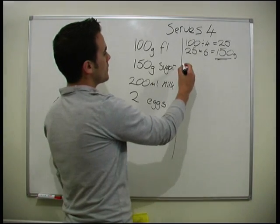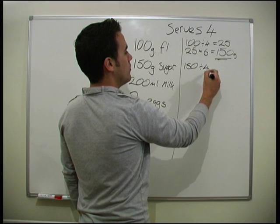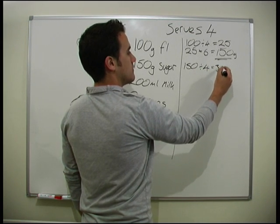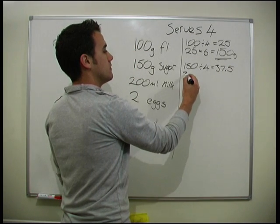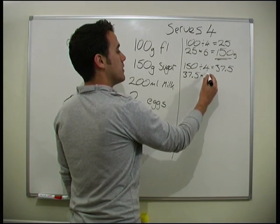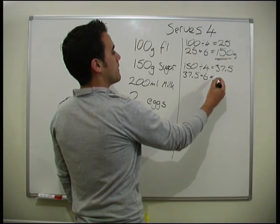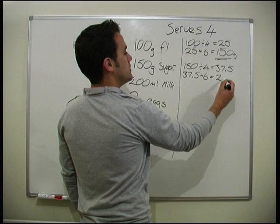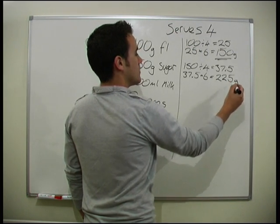And we do the same for everything. So we'll do 150 divided by 4, which is 37.5. And then we'll do 37.5 times by 6, which is 225 grams of sugar.